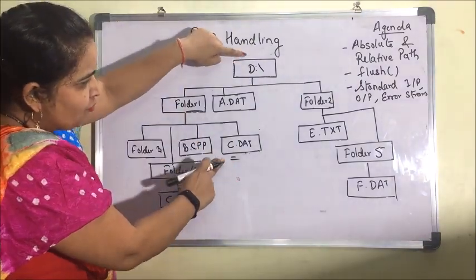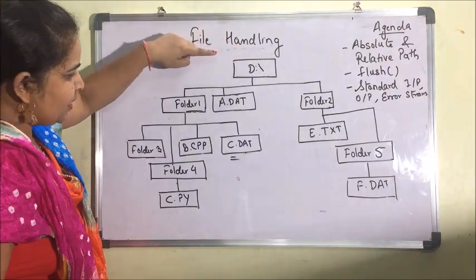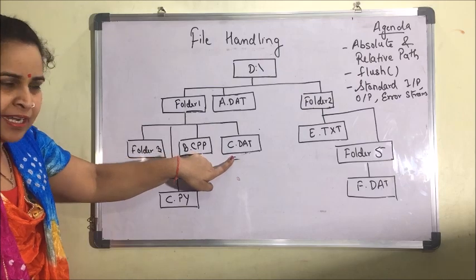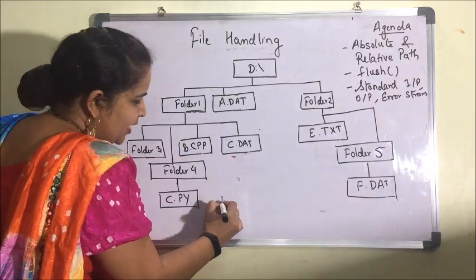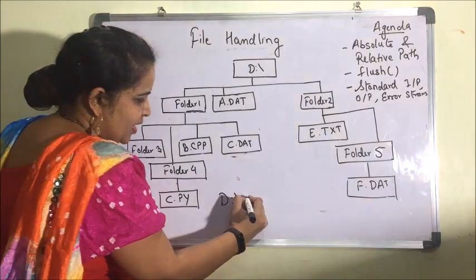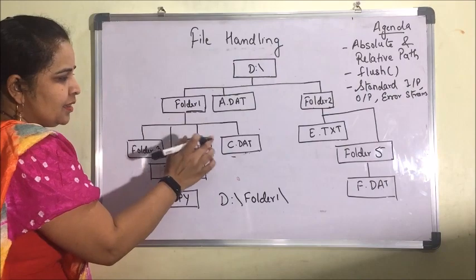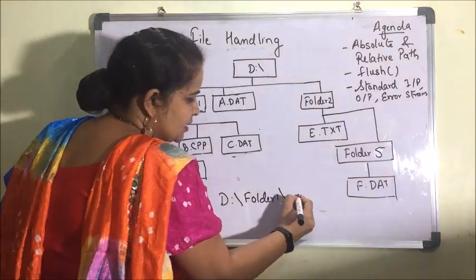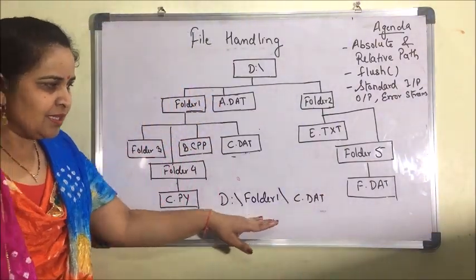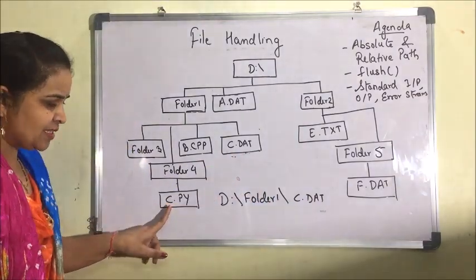For absolute path, the location of this file requires you to go from the root, that is D drive, and then you can see folder one and then the c.dat file. So you write: D drive backslash, then folder one, backslash, then c.dat. This is the absolute path of this particular file.